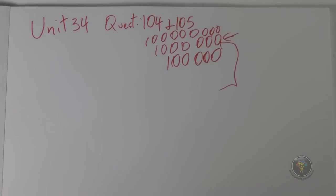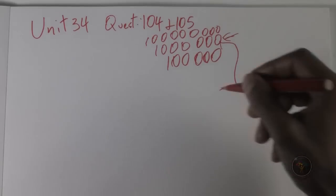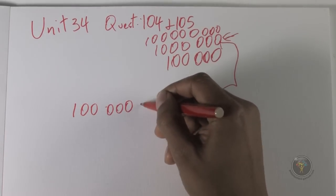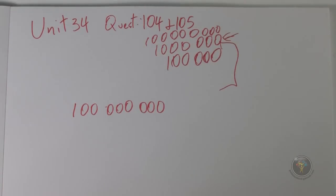Question 105 asks: which is the best estimate of the reduction in size of the normal bacterial population between drenching and day seven? The normal bacterial population is curve number two — the other curve is the salmonella. Looking at curve number two, at drenching the value is around 10 to the 8, which is 100 million.